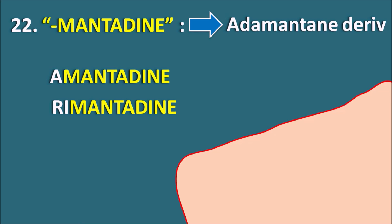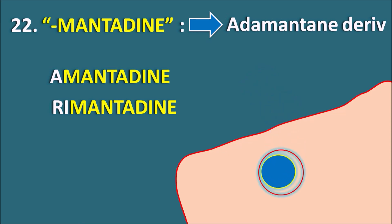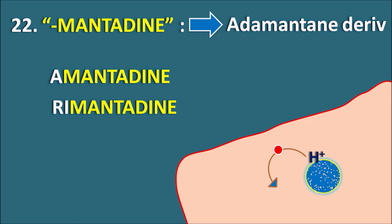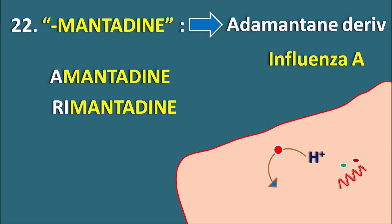These two drugs act on viral uncoating. When a viral cell enters the host cell, it undergoes endocytosis and an endosome coat is formed on the viral cell. The viral cell expresses M2 ion channels, which are responsible for the entry of protons into the cell. When protons enter this endosome layer, they disrupt the layer and release viral contents into the host cell. Amantadine and Rimantadine block the M2 ion channels, thereby inhibiting viral uncoating. This M2 ion channel is present in influenza A virus, so these drugs treat influenza A infection.